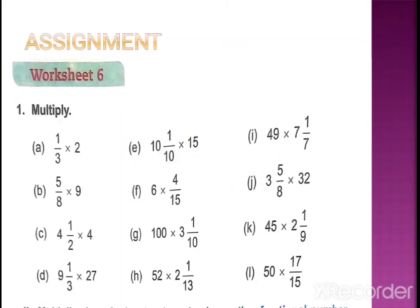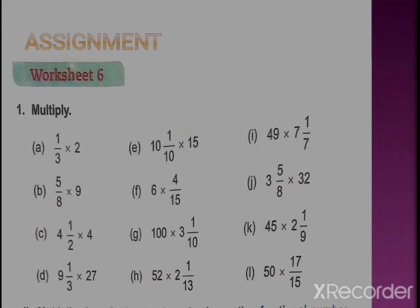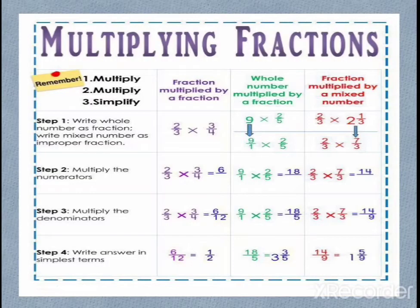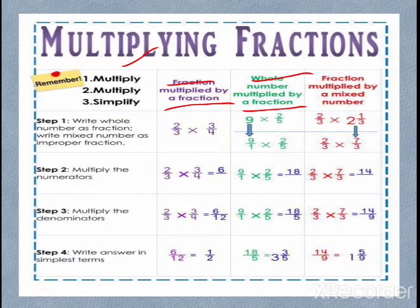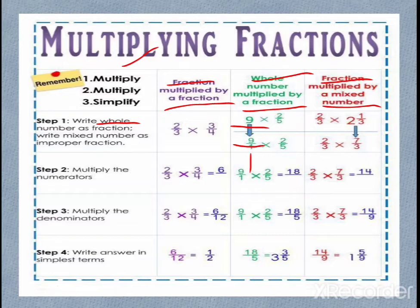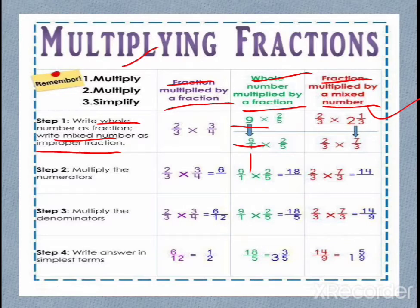Now we will learn three methods. First: multiply a fraction by a fractional number. Second: multiply a whole number by a fractional number. Third: multiply a fraction by a mixed number. If we have to multiply a whole number, we represent it in fractional form — since there is no denominator given, the denominator is 1. If there is a mixed number, we first convert it into an improper fraction. So in all cases, everything must be represented in fraction form before multiplying.